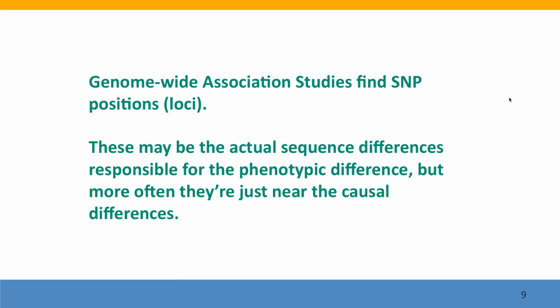A genome-wide association study finds SNP positions. It doesn't necessarily find the genes, and it doesn't necessarily find the genetic sequence differences that are responsible for the phenotypic difference. Sometimes the SNP differences may be the actual responsible sequence differences, but most of the time the SNP differences are just close to the causal differences — the SNP chip doesn't include the causal differences by chance. So there's still a lot of research that needs to be done to pin down what sequence differences actually cause the phenotypic difference.